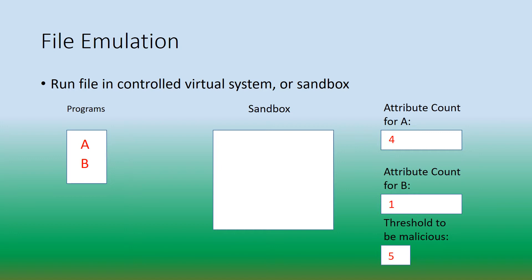File analysis and genetic signature detection are both types of static methods of analysis. File emulation is a type of active heuristics analysis, and this involves running and testing the file itself. Instead of a system, we now have a sandbox, and this sandbox allows us to run a program and analyze whether or not it is malicious by watching its behaviors and actions. Program A enters the sandbox, we let it run, and it turns out that it does in fact install rootkits and disable security protocols. Both of these are negative attributes of A, so we increase the attribute count of A from 4 to 6.